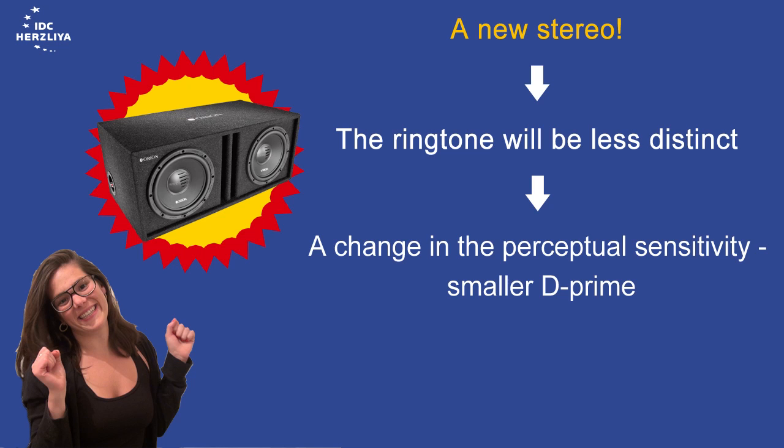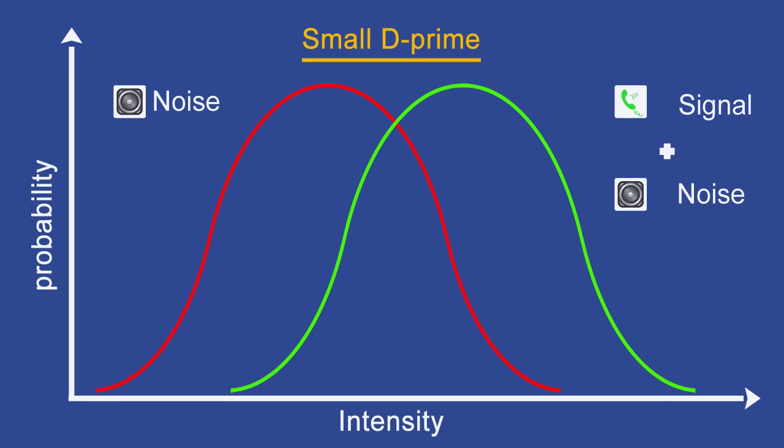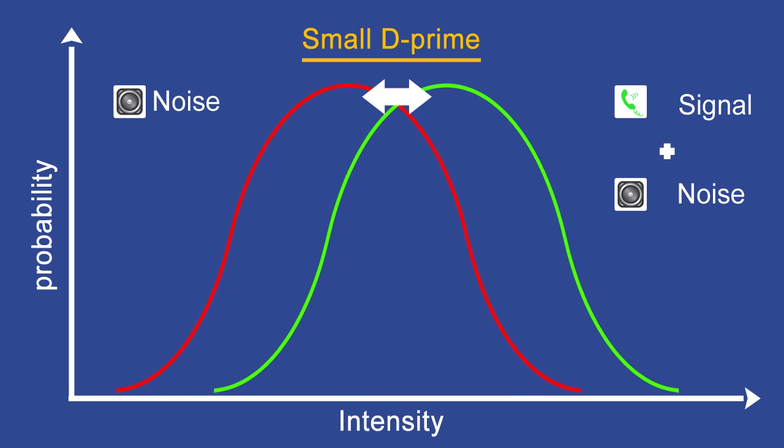The D'prime will become smaller, and we can reasonably assume there will be less hits, and we have less correct rejections. The signal is less discriminable than the noise, and the two functions get closer.